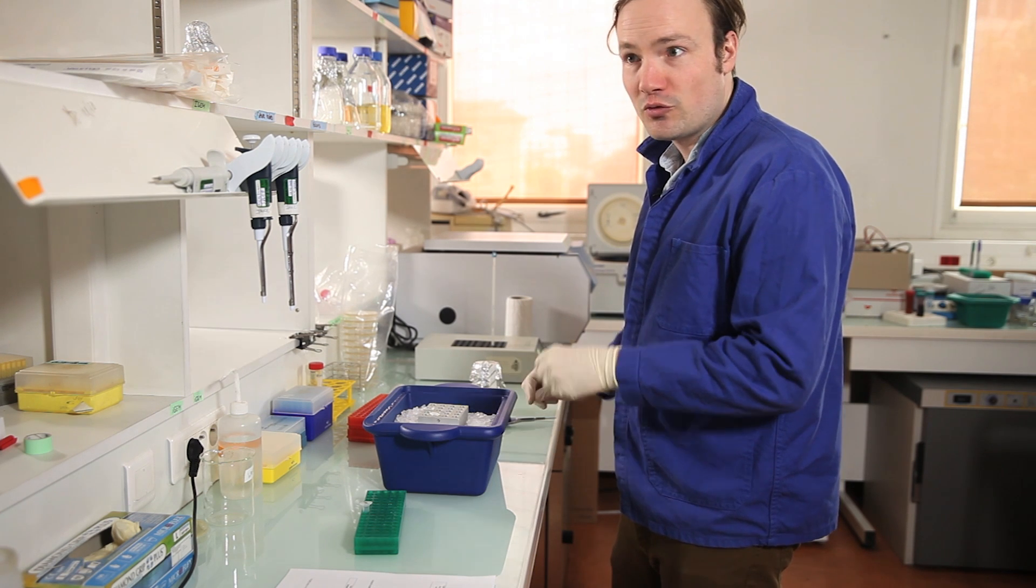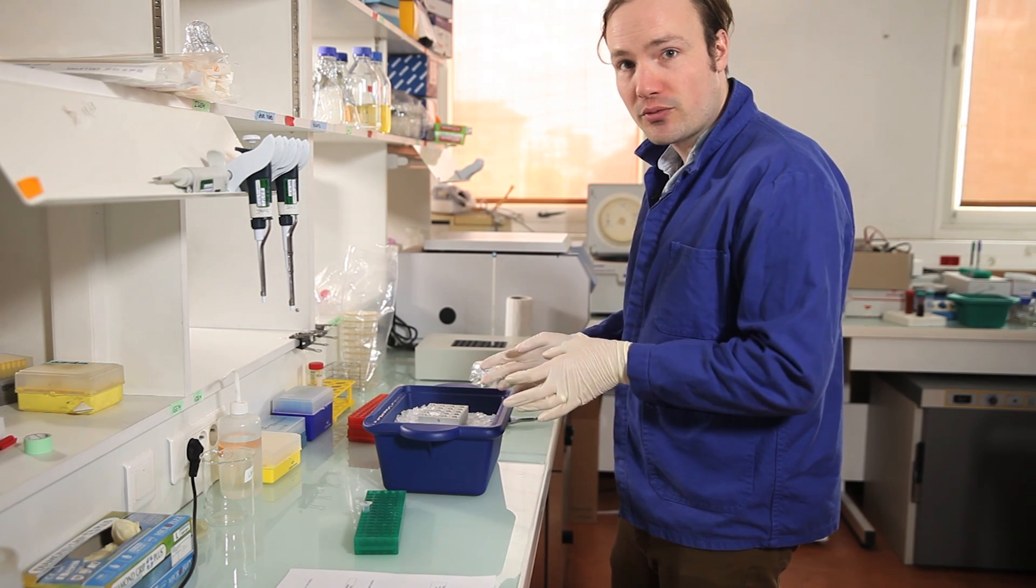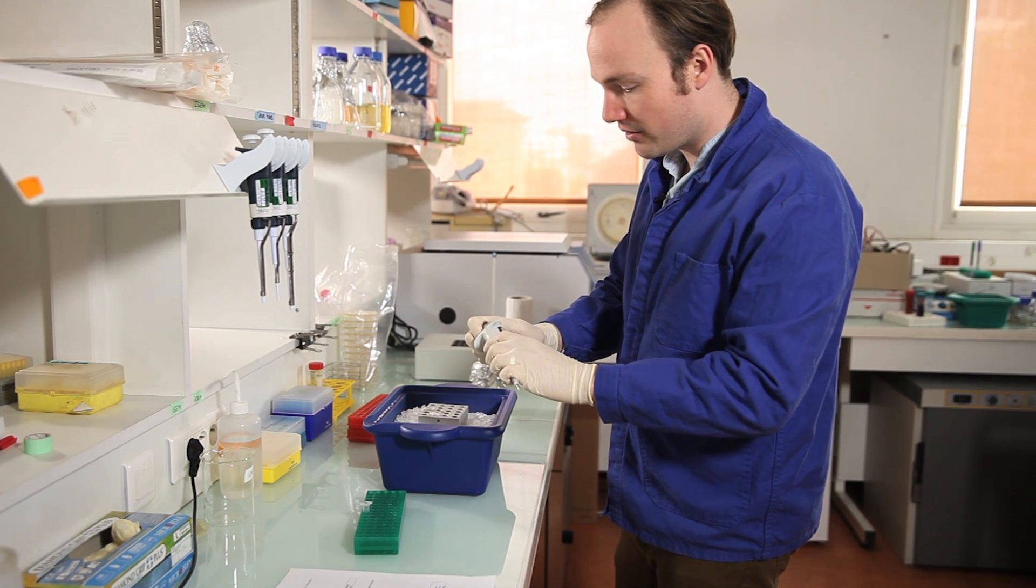If I was working with like a ligation product, for example, I would use a larger volume, maybe two or three microliters to get the number of transformers that we need. But for this, we just need a whisper, a whisper of cells. So we'll go all the way down to half a microliter.